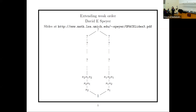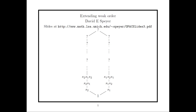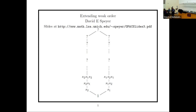Welcome back to the afternoon session. A quick announcement: snacks will be ready in Vincent Hall by 2:30. For the afternoon session, we're happy to have our first speaker, David Speyer from the University of Michigan, who will talk about combinatorics of Coxeter groups.